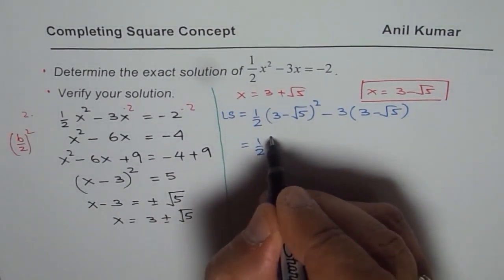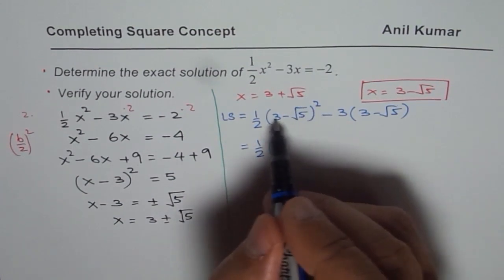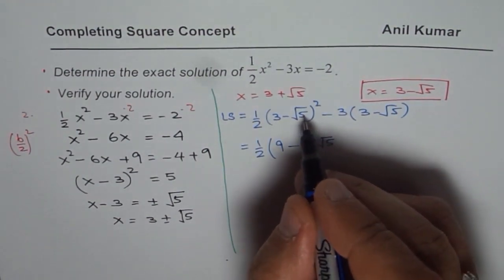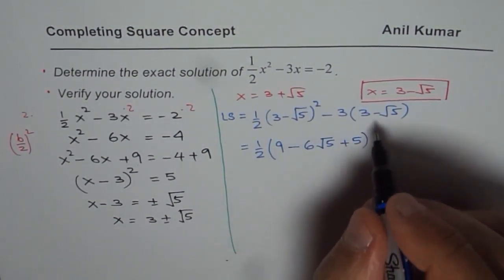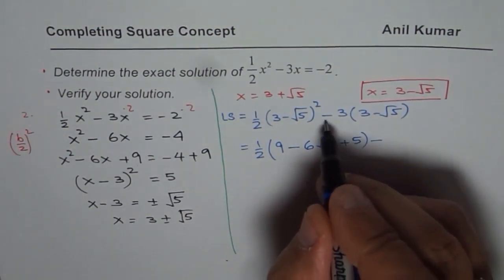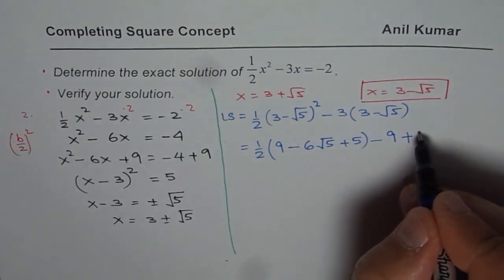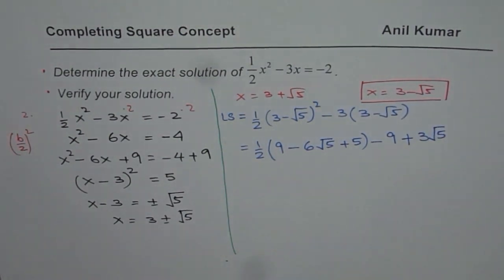So we get half of 3 square is 9 and then 2 times AB means with the negative sign 6 square root 5 and then square of 5 which is 5, square root of 5, right? Let's multiply this gives me minus 9 and minus and minus is plus plus 3 square root 5. So that is what I get here.